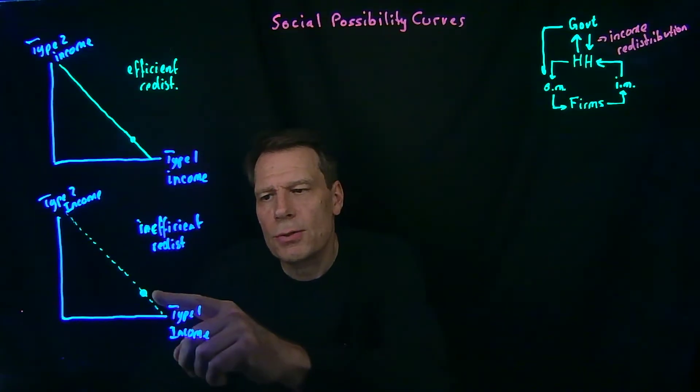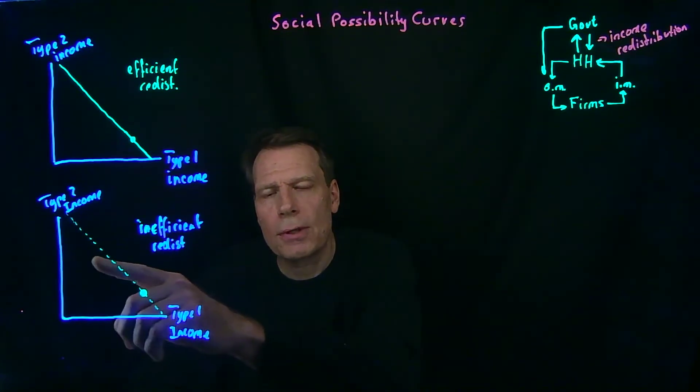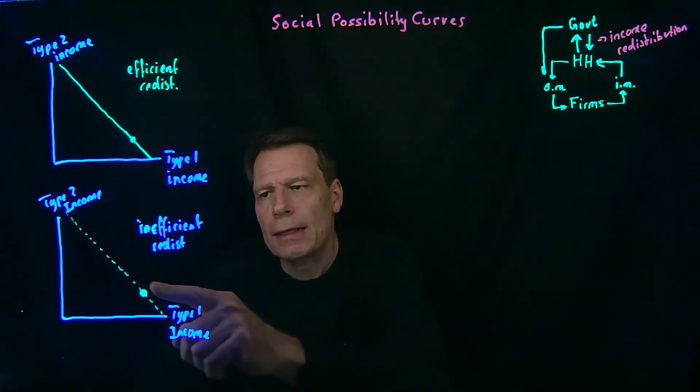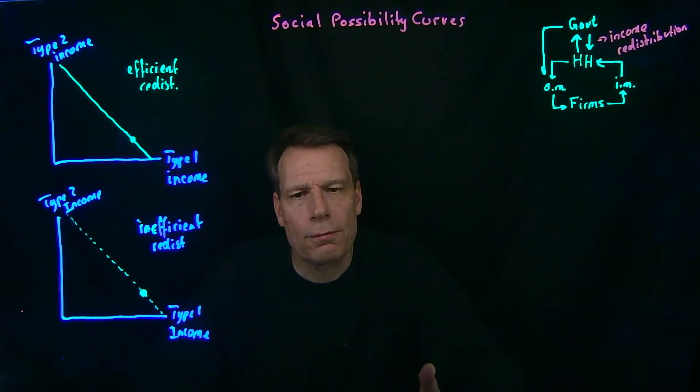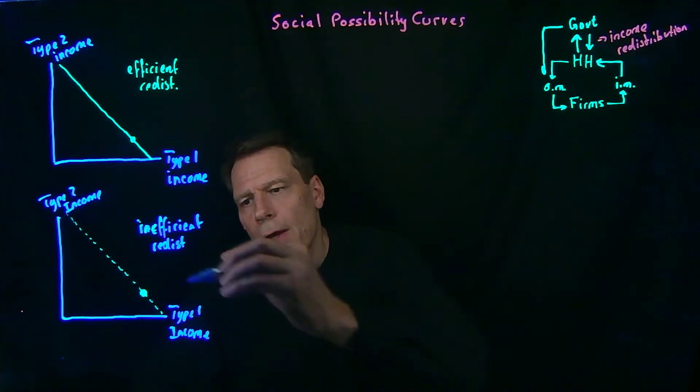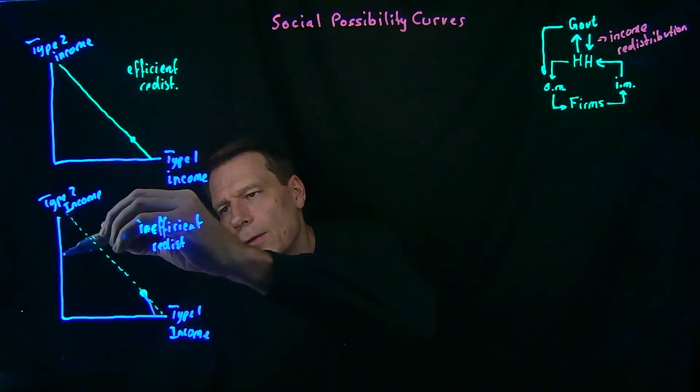But as we redistribute away from type 1 people to type 2 people, we're not going to be able to reach that green line that forms the efficient level of redistribution. We'll lose the deadweight loss in the process. So we'll get a social possibility curve that looks more like this.